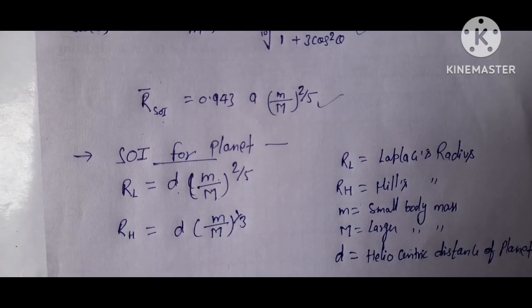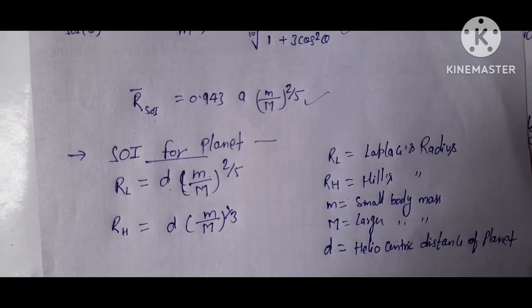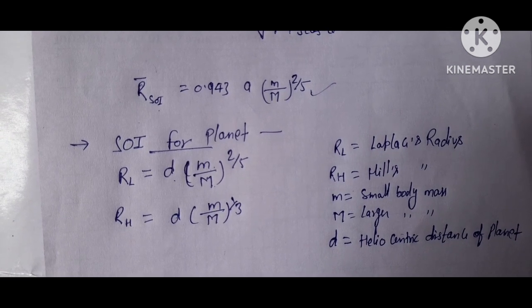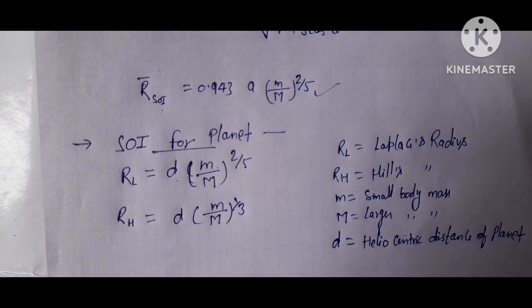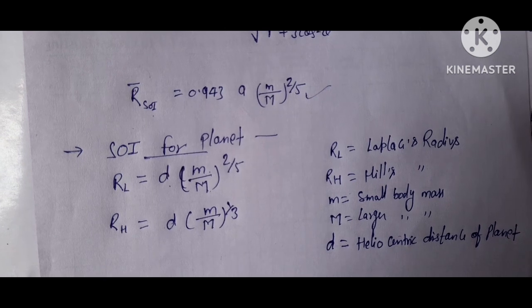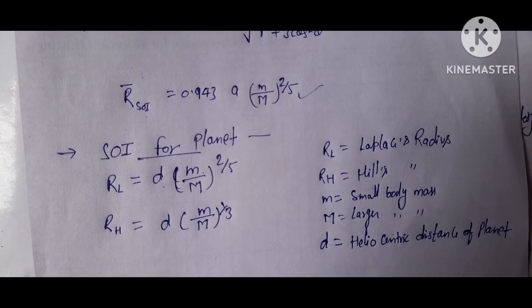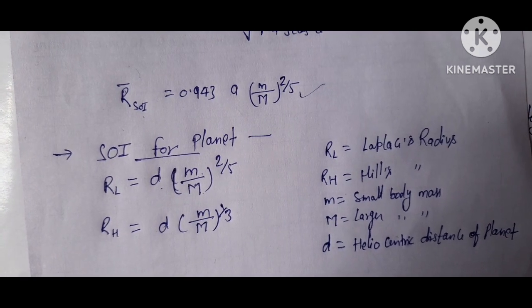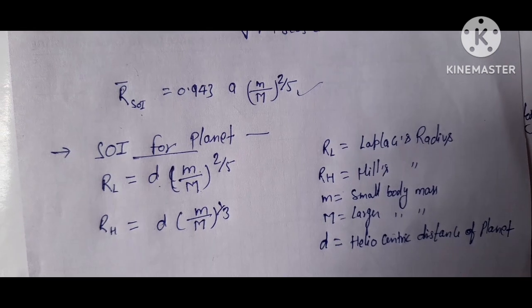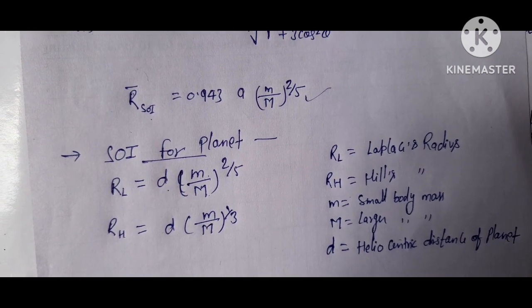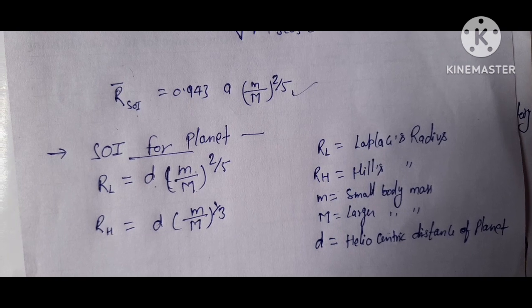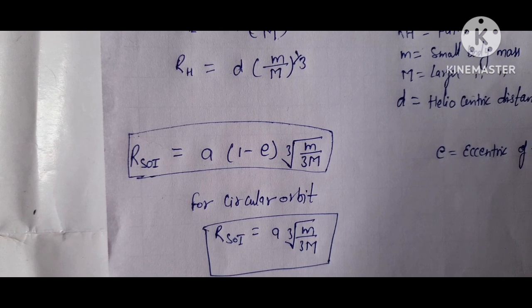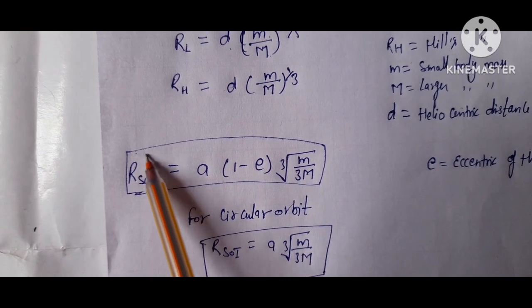If you want to describe SOI in another definition, then you see here the definition is: the Sun is much more massive than any of the planets and its gravity dominates the solar system. Only very near to the planets like Earth, the planetary gravity becomes stronger than that of the Sun, and this region around the planet is referred as SOI of that particular planet as well as Earth.